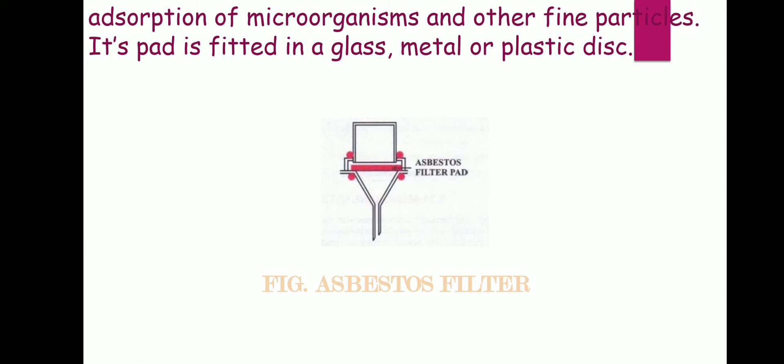The Seitz filter uses asbestos or perforated sheets as the medium. The glass, metal, or plastic disc is placed on and fitted with the container. You can fit it into the container and easily filter through it. Basically, the filter medium — that is the Seitz filter — is a disc placed in a supporting container.